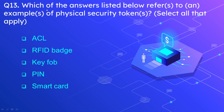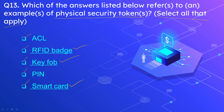Question number 13: Which of the answers listed below refer to examples of physical security tokens? Select all correct options. Options are: ACL, RFID badge, key fob, PIN, and smart card. The correct options are RFID badge, key fob, and smart card — these are all physical things. ACL or access control list is applied on network devices such as routers, switches, and firewalls, while a PIN is a non-physical thing that you enter into an operating system or a host.